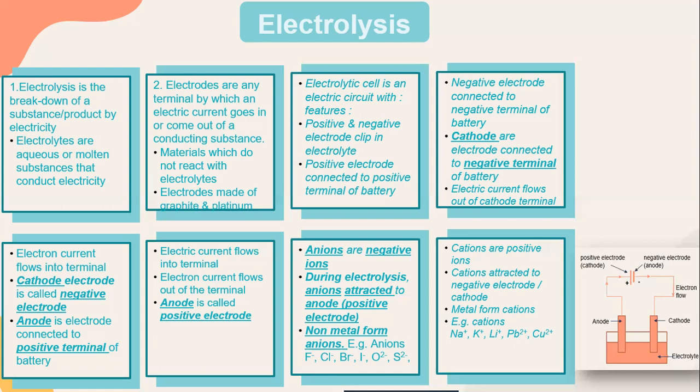An example of a mixture is CaCO₃. However, during electrolysis, it is a process of breakdown of stable products by electricity — instead of atom A combining with atom B to produce a stable product, we are moving backwards. This is called electrolysis. Electrolytes are aqueous or molten substances that conduct electricity. Electrodes are any terminal by which an electric current goes in or comes out of a conducting substance. Materials which do not react with electrolytes as electrodes are graphite or platinum.